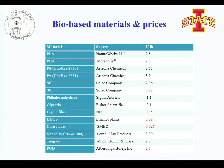To give an idea of pricing: biobased polymers like PLA and PHA range from $2 to $4 per pound. However, fillers are much cheaper — lignin fiber is around $0.35 per pound, DDGs is $0.08 per pound, and corn stover is $0.27 per pound. So it makes a lot of sense to blend high-price biobased polymers like polylactide with these fillers to reduce cost. Some fillers are also biodegradable, so we can control biodegradation rate through polymer blends or composites.